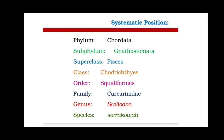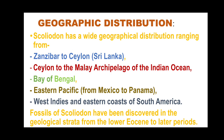The order Squaliformes refers to the body shape: the body is typically spindle-shaped, meaning it tapers toward both ends — narrowing near the head and the tail — while the middle part of the body is slightly broader. Family is Carcharhinidae, genus is Scoliodon, and species is sorrakowah. This completes the systematic position of Scoliodon sorrakowah.